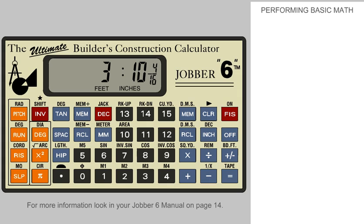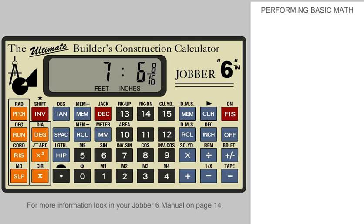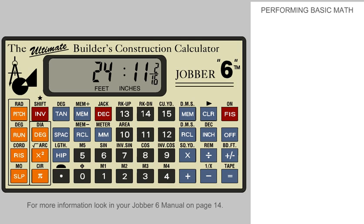In our example, we will work with the lowest common denominator. Now, add 7 feet, 6 and 1 half inches. Continue to add 24 feet, 11 and 1 eighth inches. Subtract 8 feet, 3 and 1 half inches.